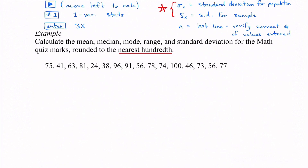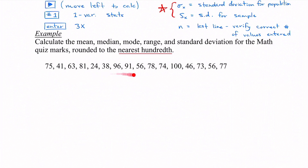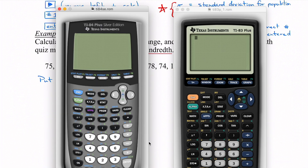Now we'll calculate the mean, median, mode, range, and standard deviation for the math quiz marks, rounded to the nearest hundredth. These are all the quiz marks — 75%, 41%, and so on, all the way up to 77%. What we've got to do first is put these into a list and organize them in order.